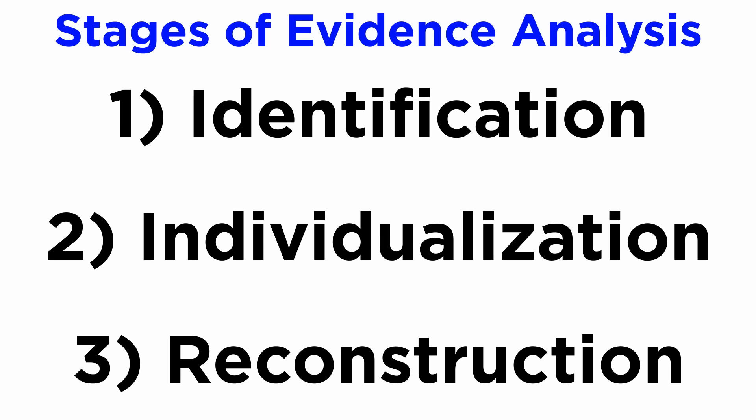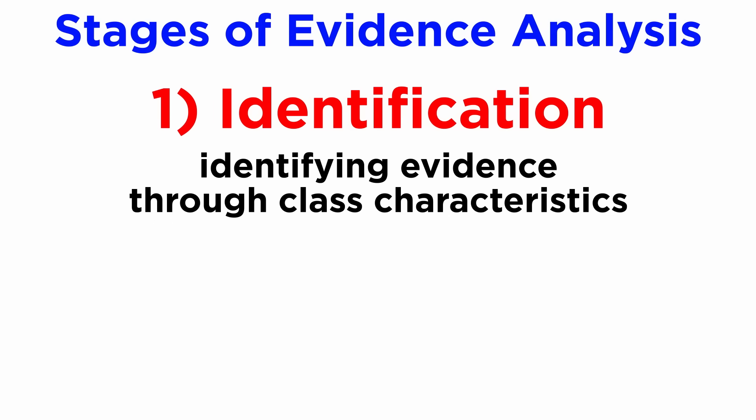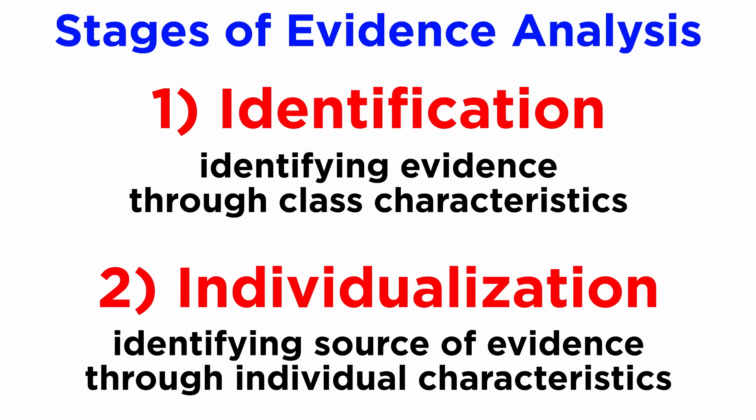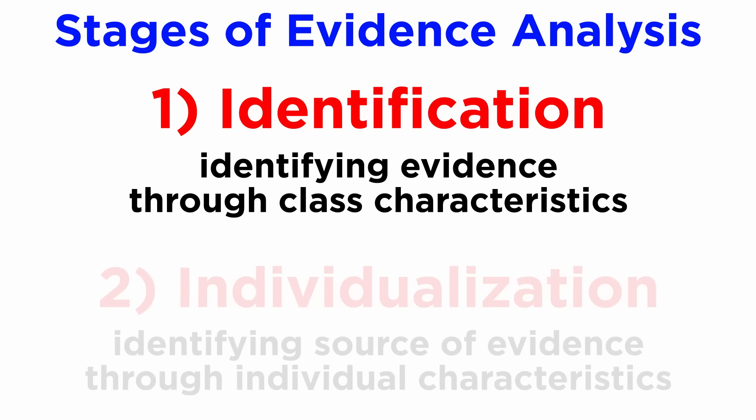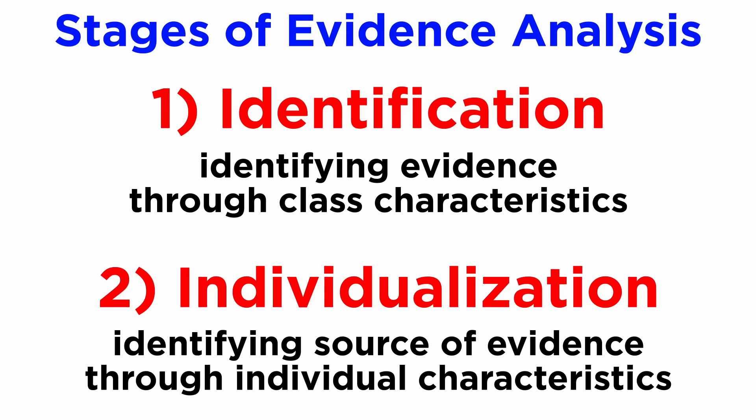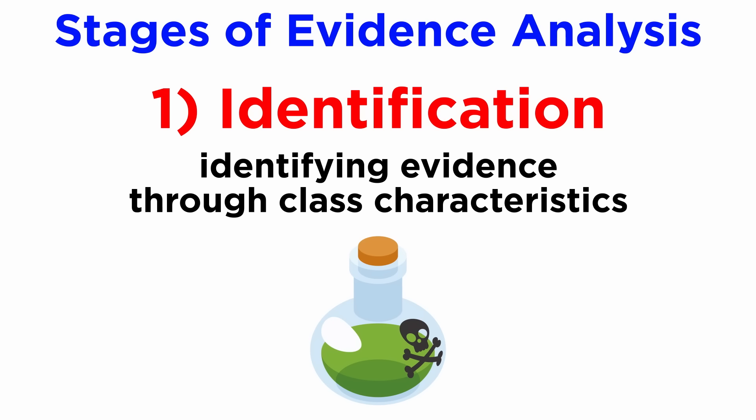The first stage of laboratory investigation is identification — identifying evidence by examination of class characteristics. The second stage is individualization — identifying the source of evidence by examination of individual characteristics and their comparison with control samples. Both stages are carried out in sequence. Though mere identification won't determine the exact source, it assists in excluding other substances of origin. In cases involving identification of drugs and poisons on materials or human viscera, identification alone is enough to incriminate a suspect, and individualization is not needed.